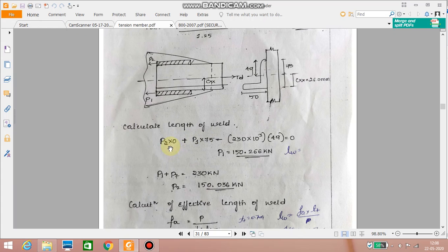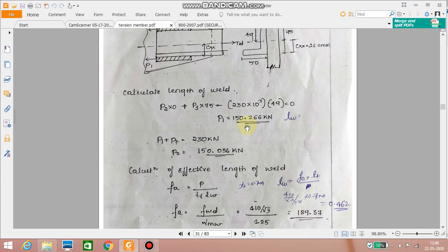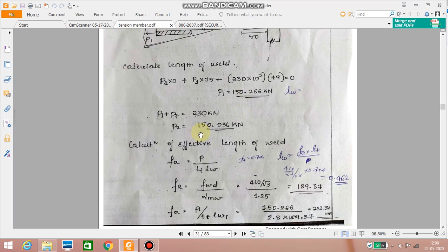Length of the weld can be easily calculated using P2 into 0 by taking moment about this plus P1 into 75 equal to 230. 230 is the applied load into 10 raise to 3 that is Td into 49. So upon solving we get P1 equal to 150.266 kilonewton. So P2 works out to be 79.734 kilonewton.